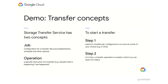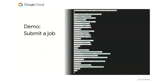The second concept is the operation, which captures a specific instance or execution of a transfer. For instance, you may configure a job to run every day at noon, and you will have an operation for Tuesday's run at noon, which will tell you specifically what happened on that transfer with counters, errors, and so on. Submitting a job is essentially a two-step process: you submit a config specifying when the transfer should run, and the service will create a transfer operation and execute the transfer as configured.